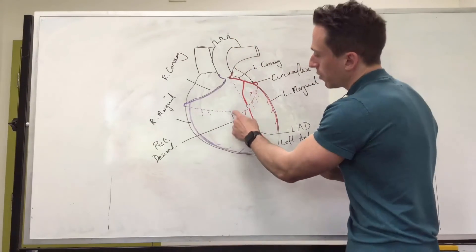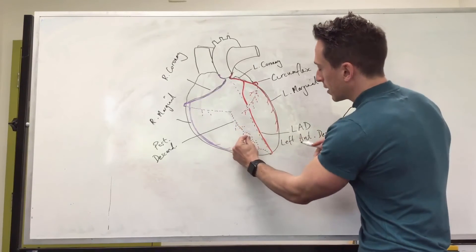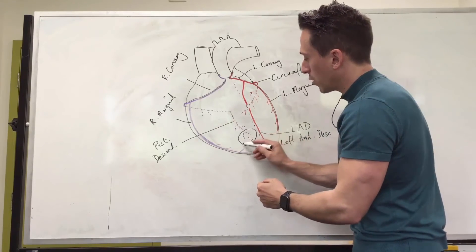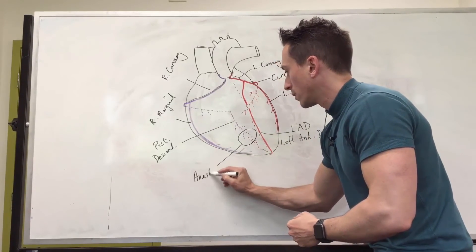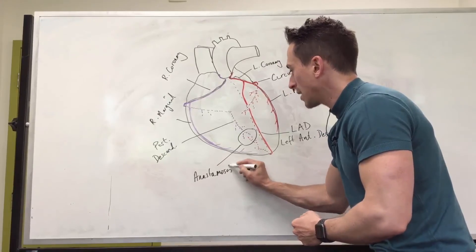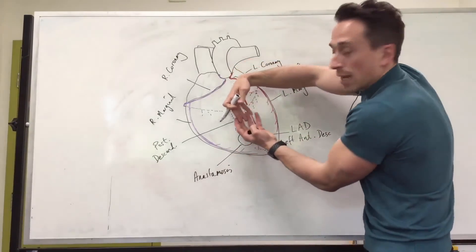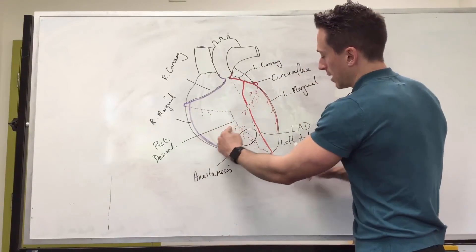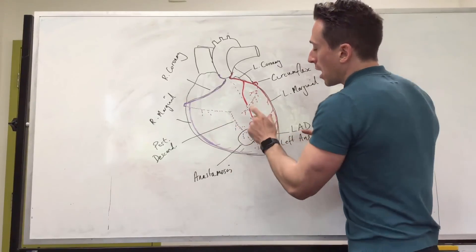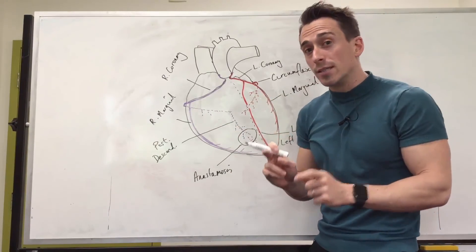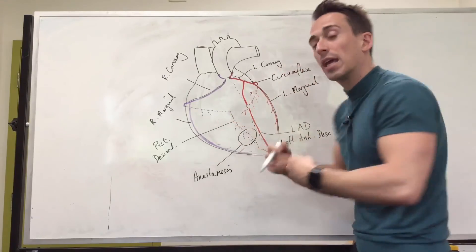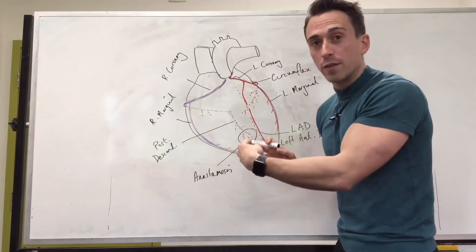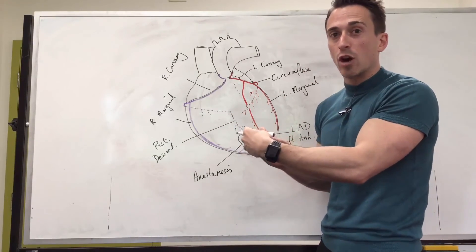The posterior descending coronary artery may join together with the left anterior descending coronary artery — that's called an anastomosis, which is where blood vessels join together. This anastomosis between the posterior descending and the LAD at the back of the heart is more common in people with coronary artery disease, because if there's a blockage somewhere, joining the vessels increases the likelihood that the whole heart gets fed, reducing the risk of myocardial infarction.